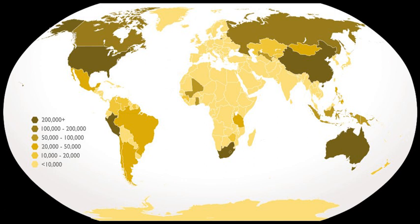Desai believed that Indians would respond positively to these steps, stop consuming gold, and help conserve precious foreign exchange. However, new gold jewellery purchases were either recycled or smuggled gold. This legislation killed the official gold market, and a large unofficial market sprung up dealing in cash only. Gold was smuggled in and sold through unofficial channels, wherein many jewellers and bullion traders dealt in smuggled gold, and a huge black market developed for gold.